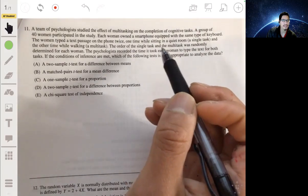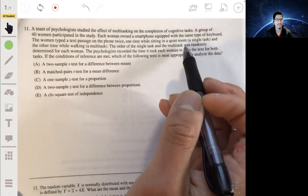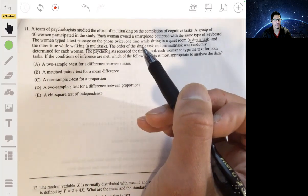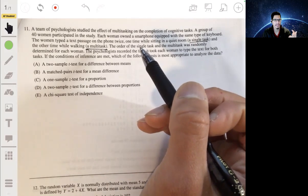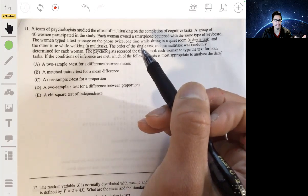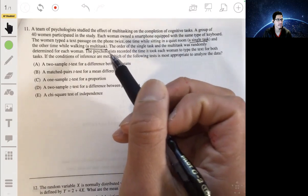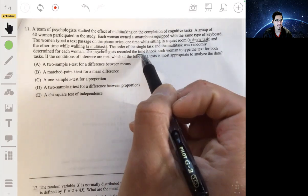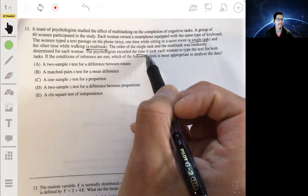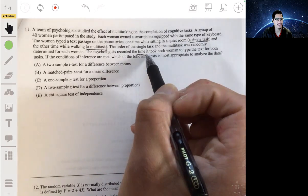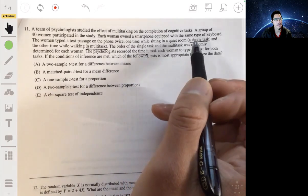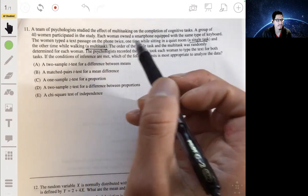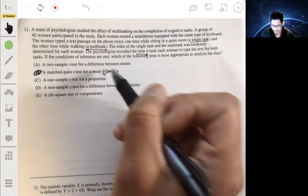Okay, so you can see that each woman basically had two treatments. They did that single task here, and then they did a multitask. So this is an example of matched pairs, matched pairs test, because each woman acted as their own pair. Their data is going to be compared to themselves. And since we're looking at the time it took, the length of time, it's going to be mean. We're going to be basically looking at a matched pairs t-test for the mean difference between how long it would take from typing when they did a single task versus a multitask. So then this will be, the answer will be B, a matched pairs. That's the only one that says matched pairs.